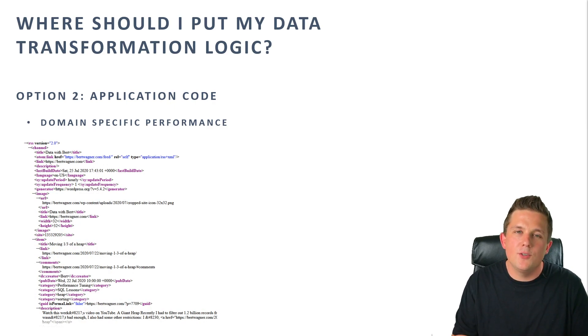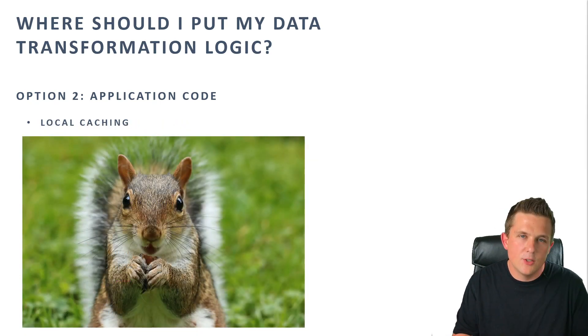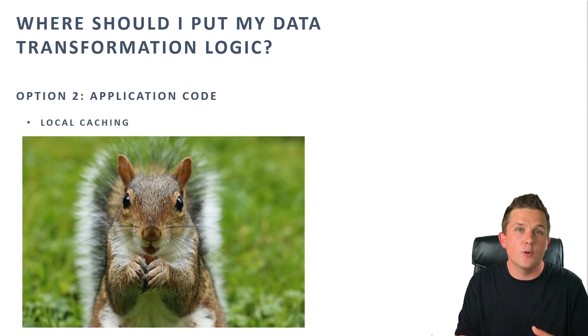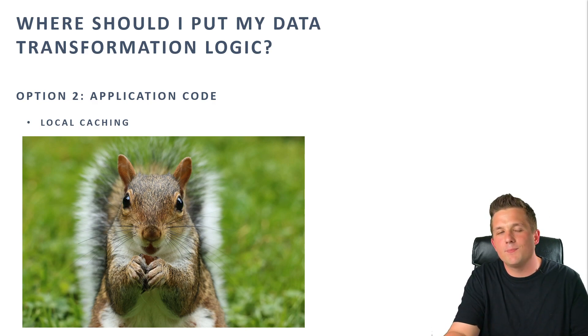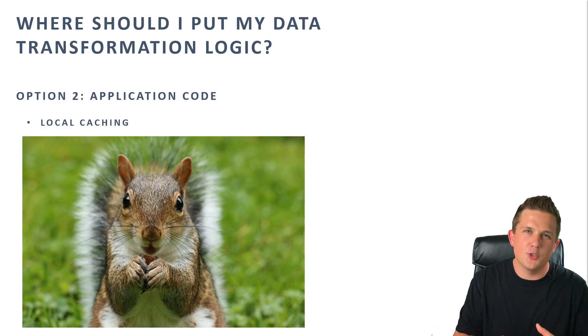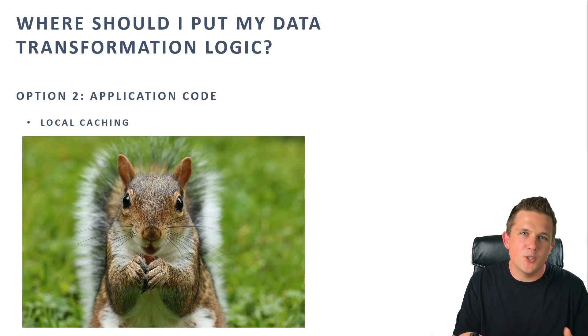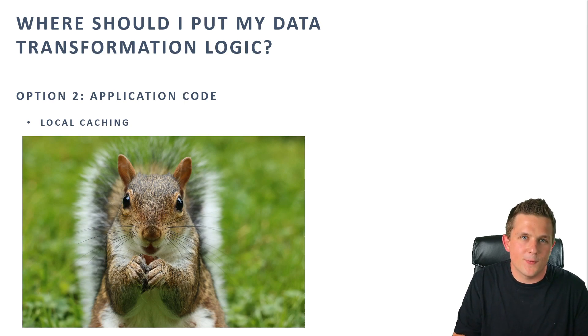Another time you may want to put your data transformation logic into your application code is with caching. If your application is doing lots of transformations over and over again on the same set of data, it may make more sense to bring all that data from your SQL database server to your application a single time and then do your filtering or joining in your application. It's going to reduce the amount of times that data has to go across the network, so you may get better performance if you just cache that data locally one time and transform it there.